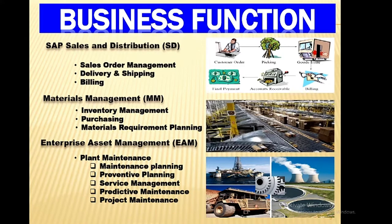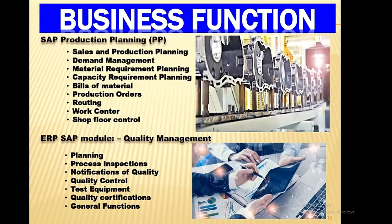Additional business functions include: Sales Order Management, Delivery and Shipping, Billing, Inventory Management, Purchasing, Materials Requirement Planning, Plant Maintenance, Maintenance Planning, Preventive Planning, Service Management, Predictive Maintenance, Project Maintenance, Sales and Production Planning, Demand Management, Capacity Requirement Planning, Bills of Material, Production Orders, Routing, Work Center, and Shop Floor Control Planning.